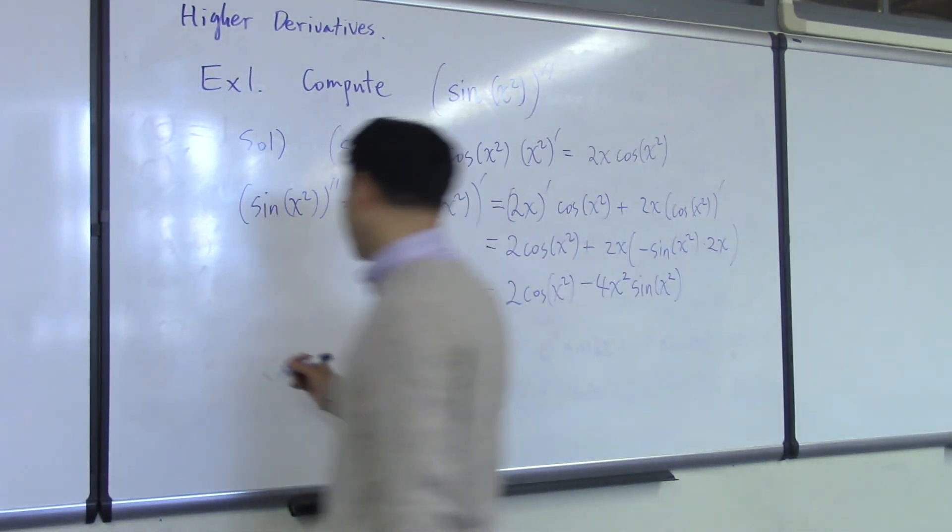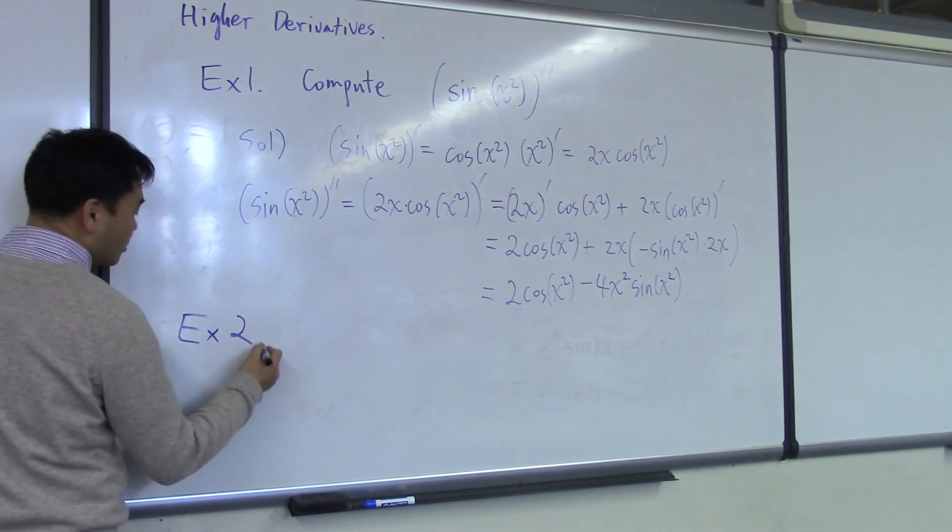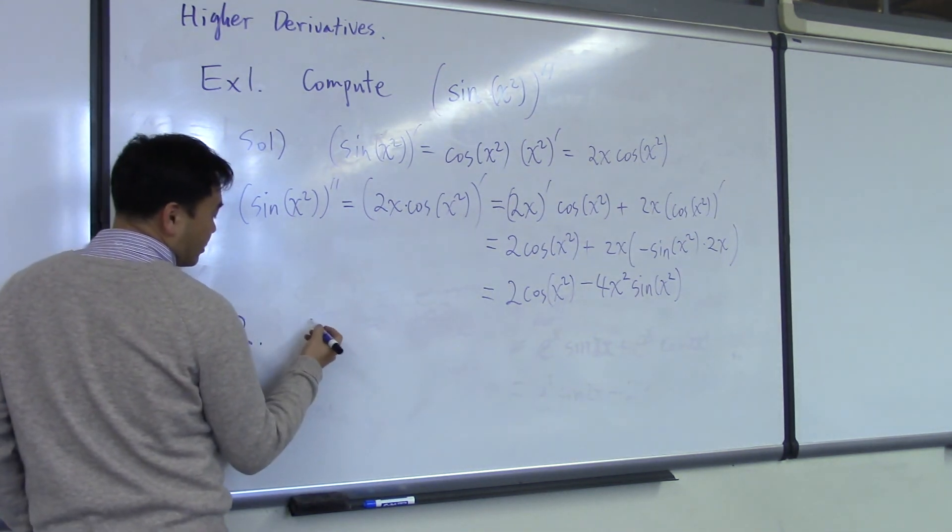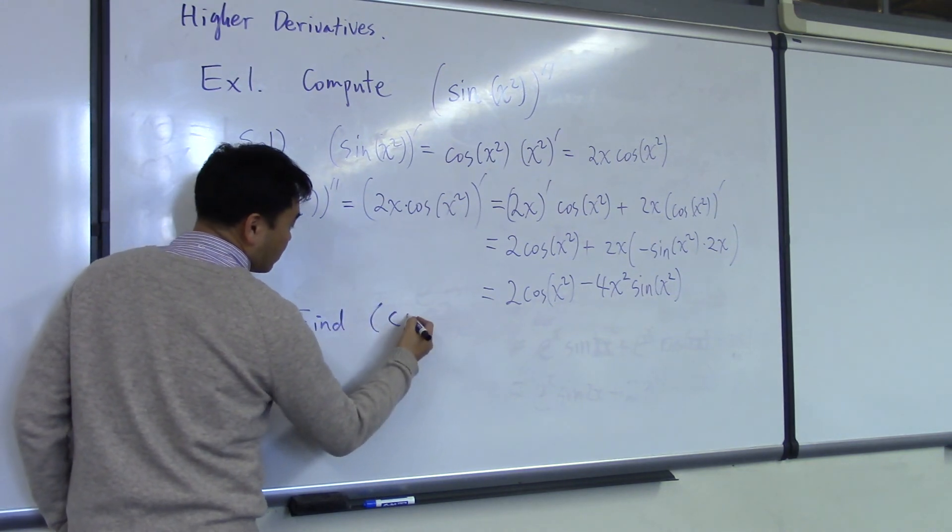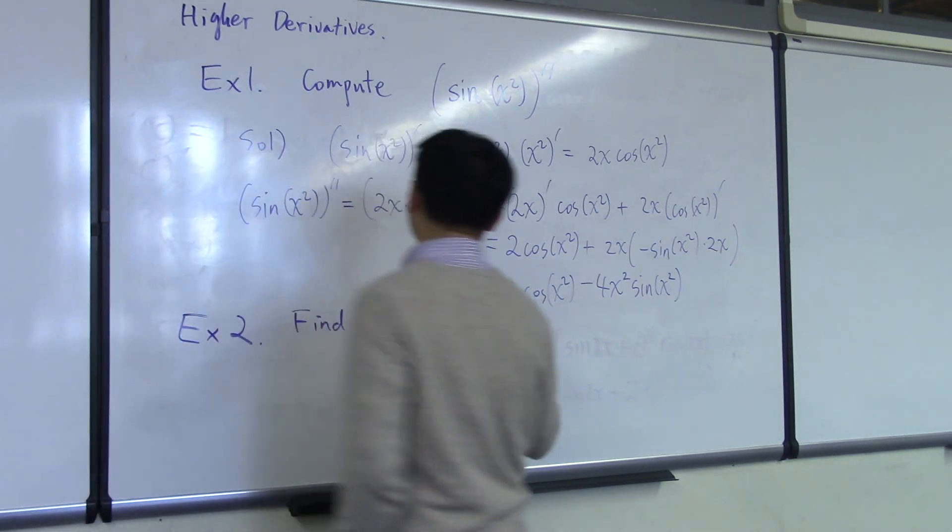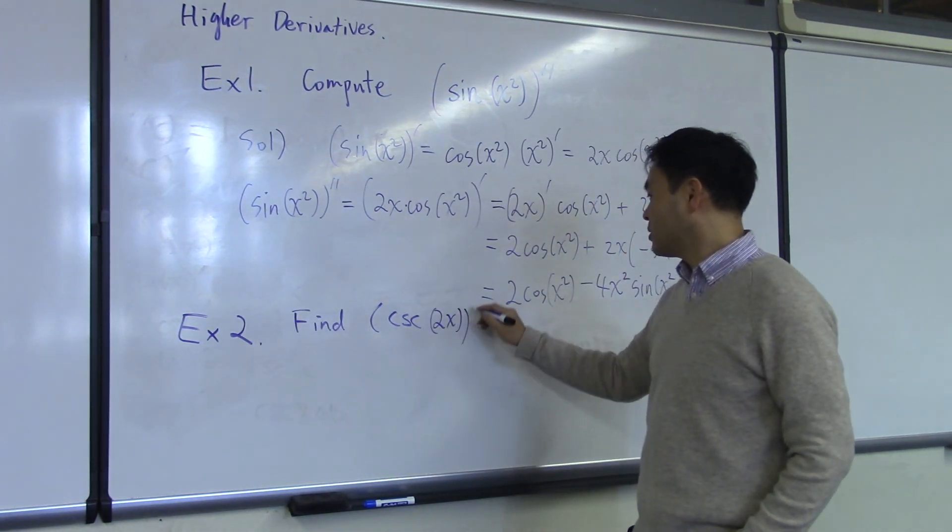Alright, so I want you to do the following example on your own. Example 2, find cosecant of 2x double prime.